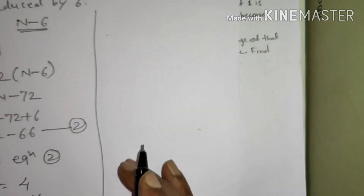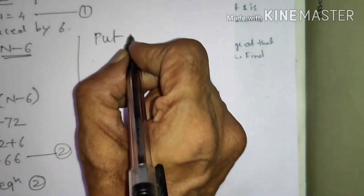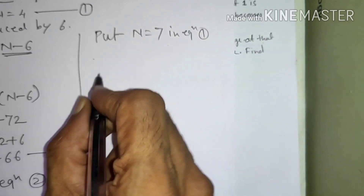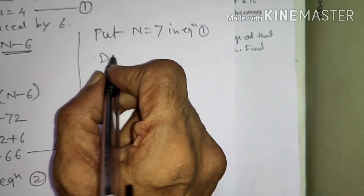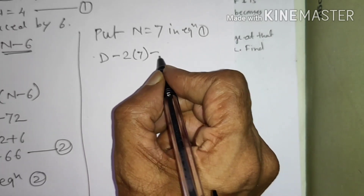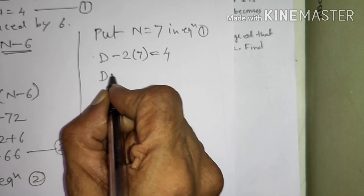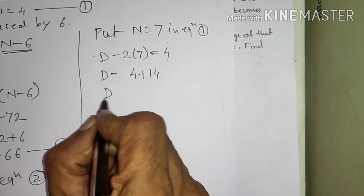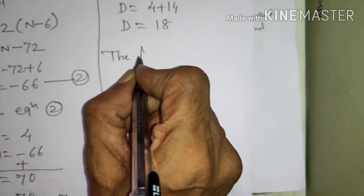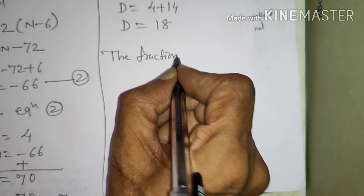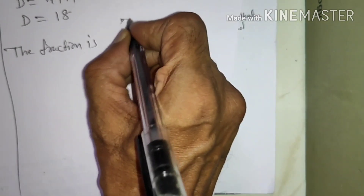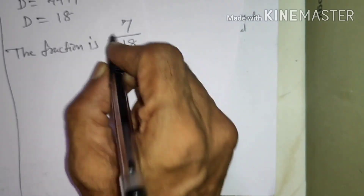Now, put N equals 7 in equation 1: D minus 2 into 7 equals 4. That is D equals 4 plus 14, so D equals 18. Therefore the fraction is numerator 7 and denominator 18 — the fraction is 7 upon 18.